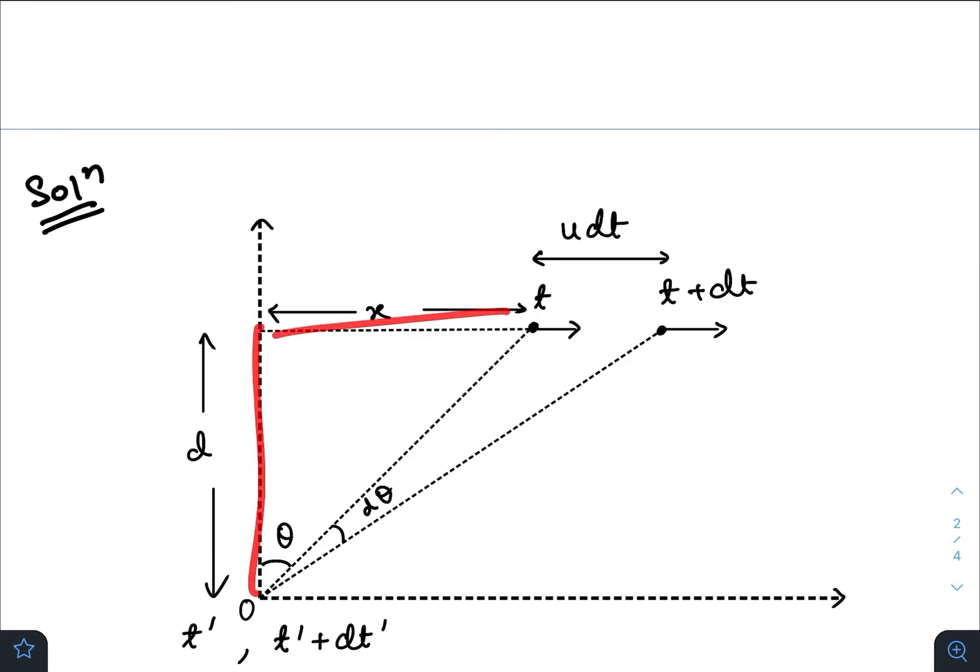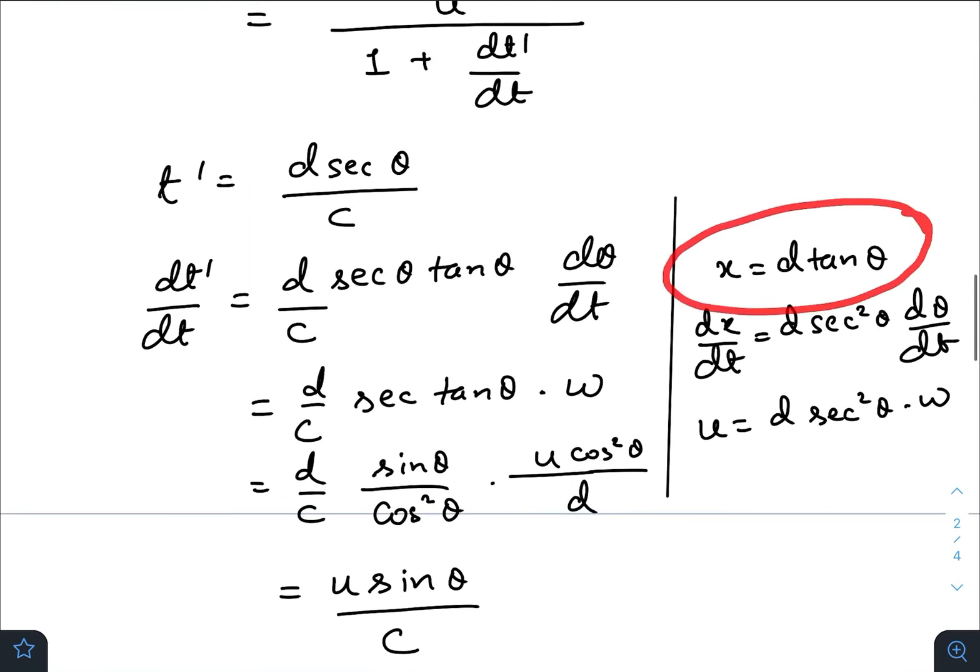x by d equals tan θ, so x equals d tan θ. Differentiating both sides with respect to t, we get dx/dt—the rate of change of x, which is u—equals d sec² θ times dθ/dt, the angular velocity.